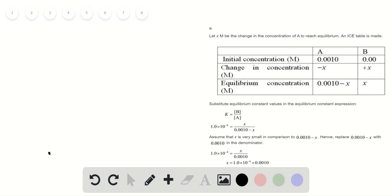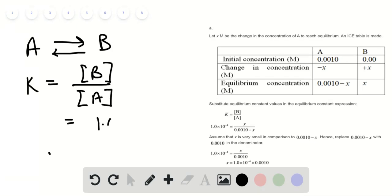The equilibrium constant expression for any reaction can be represented as A inversely proportional to B, where the equilibrium constant is concentration of product divided by the concentration of reactant is equal to 1.0 into 10 raised to power negative 4. These are the basic values.